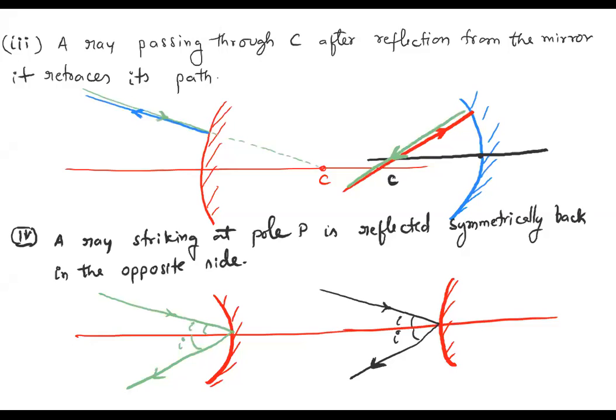Suppose any ray is passing through the center of curvature. This is the ray passing through the center of curvature — the red line. The green reflected ray from the mirror also passes through the center of curvature. It retraces its path — whatever path the incident ray follows, the same path the reflected ray will follow. That is called path retracing.